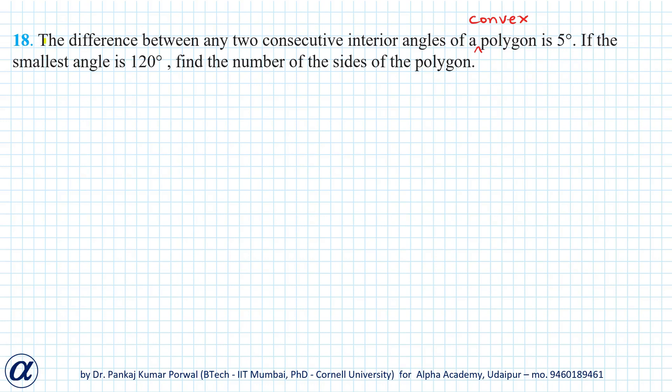In this question, we are given that the difference between any two consecutive interior angles of a polygon is 5 degrees. If the smallest angle is 120 degrees, then we want to find the number of sides of the polygon. I have added the term convex with the polygon, which means that all our interior angles will be less than 180 degrees.